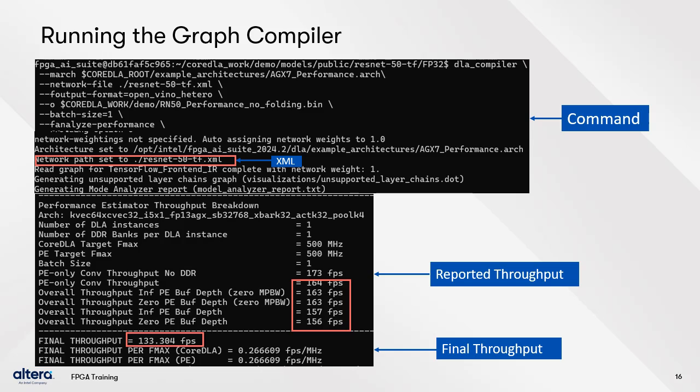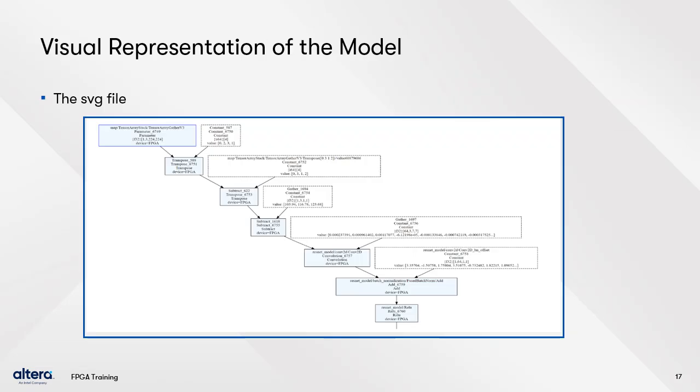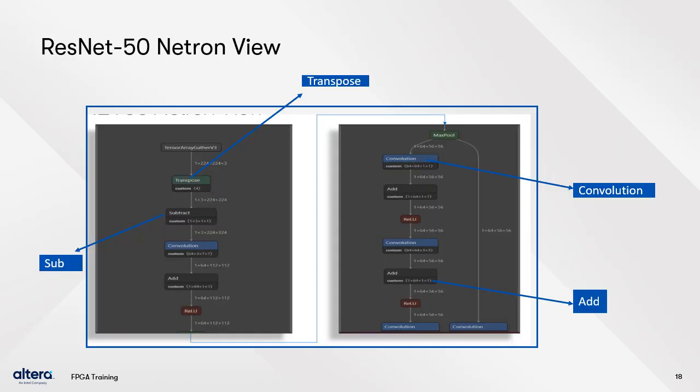The command uses the .arch file, which specifies the configuration of the IP architecture parameters such as large, small, and which activations to use. The .xml file along with the .bin describes the network; the .bin file stores parameters along with model weights and mapping files. You can view the visual representation as an SVG file in a web browser, or view the .xml file using the Netron application — here is an example of the ResNet 50 Netron view.